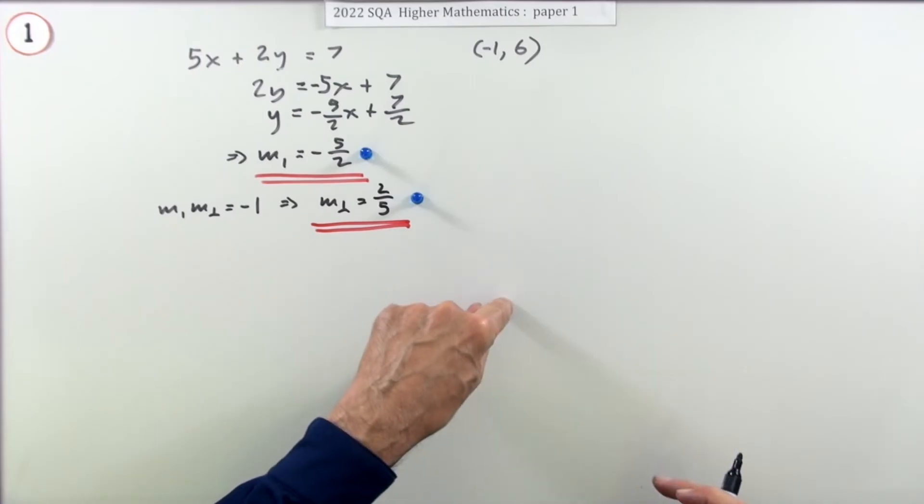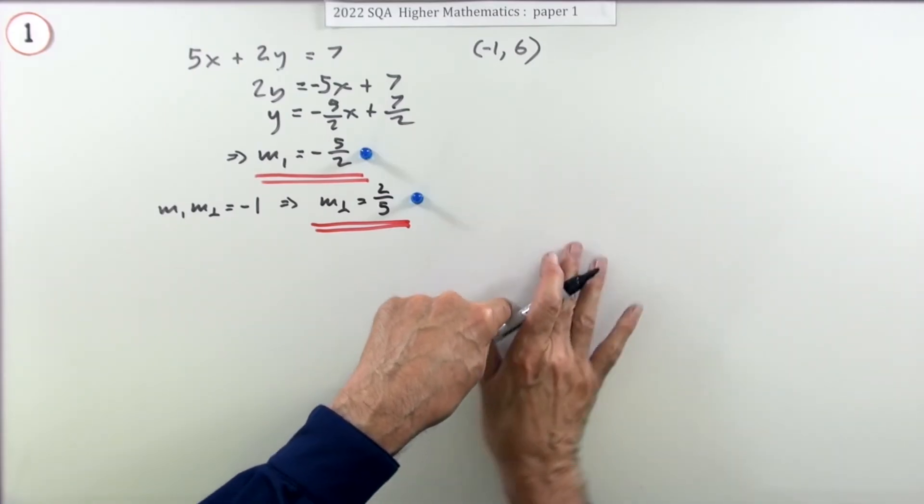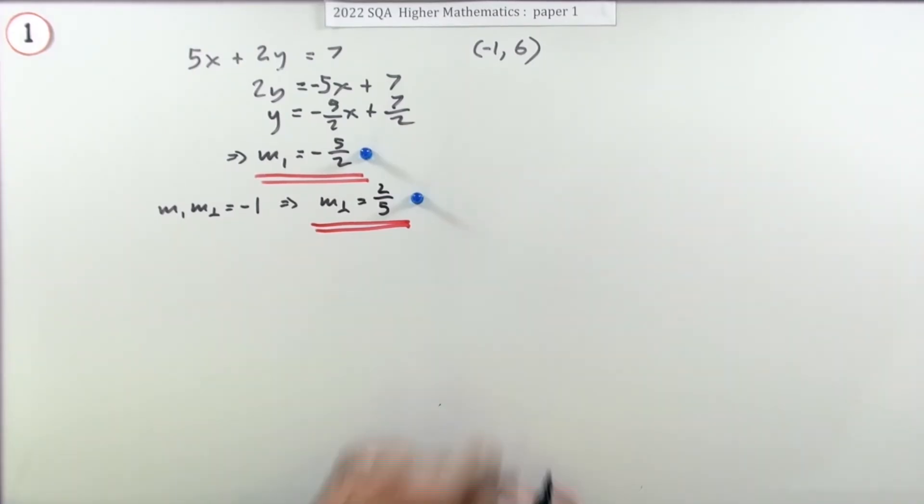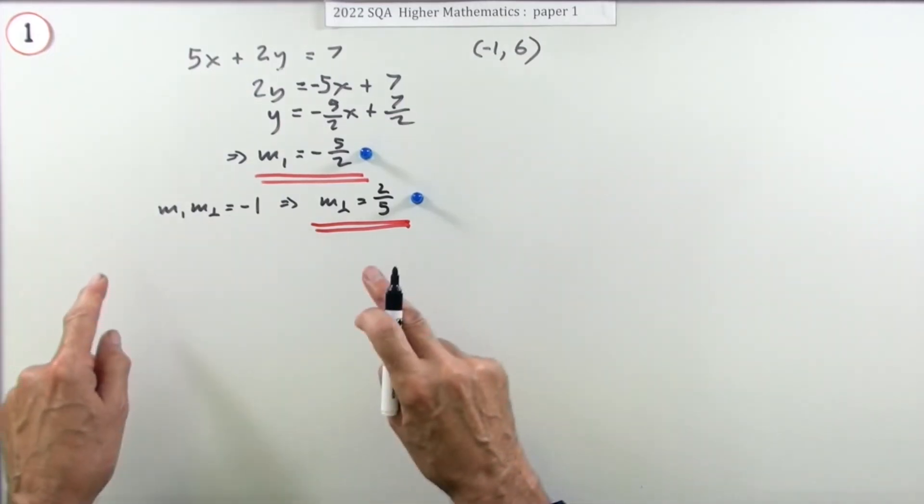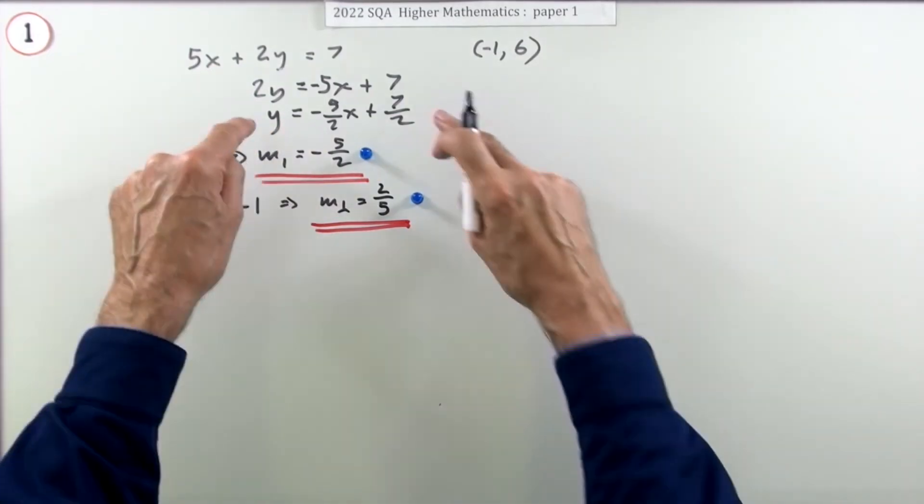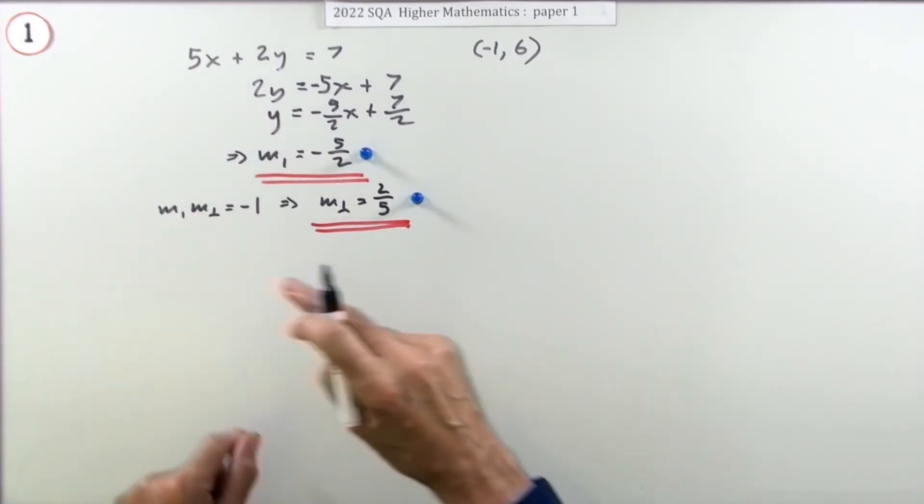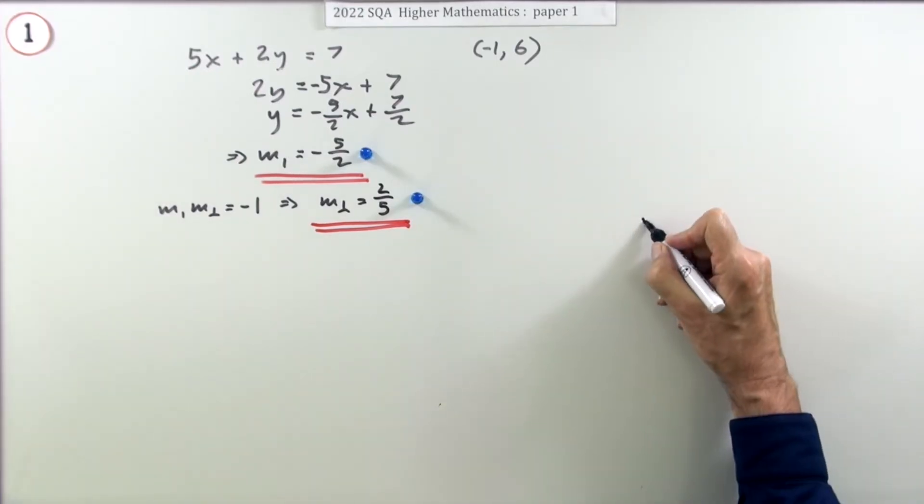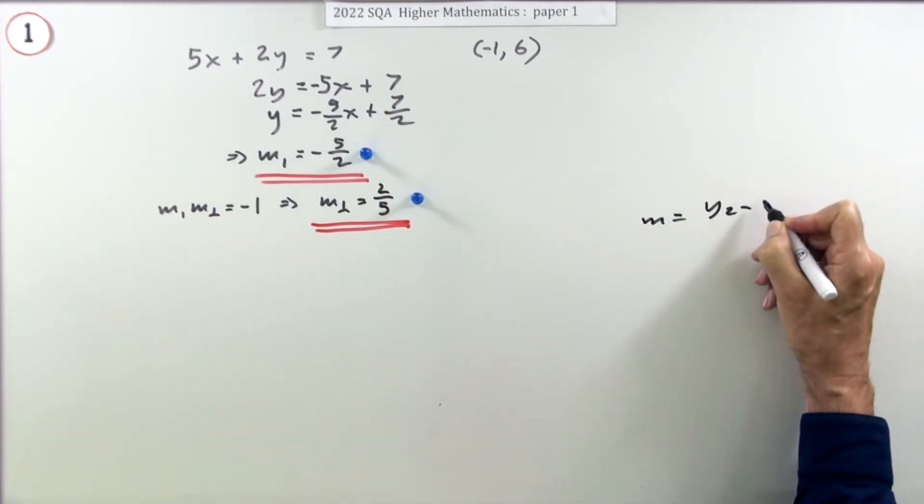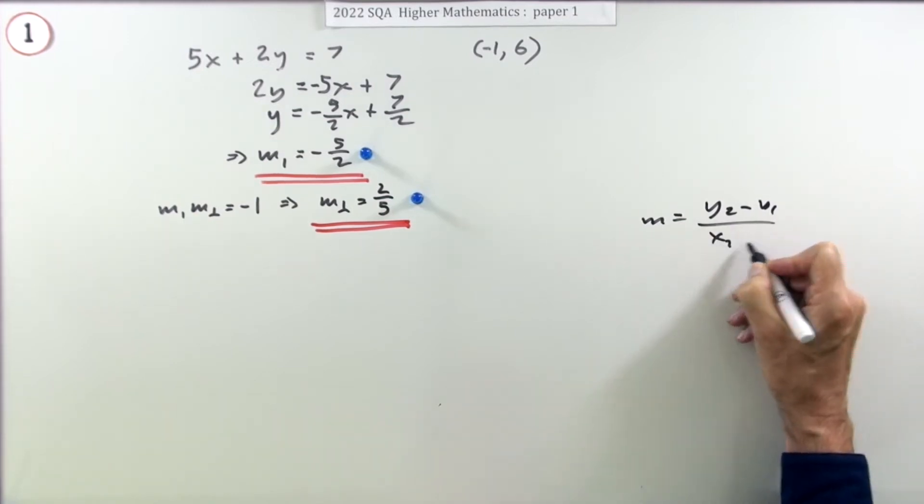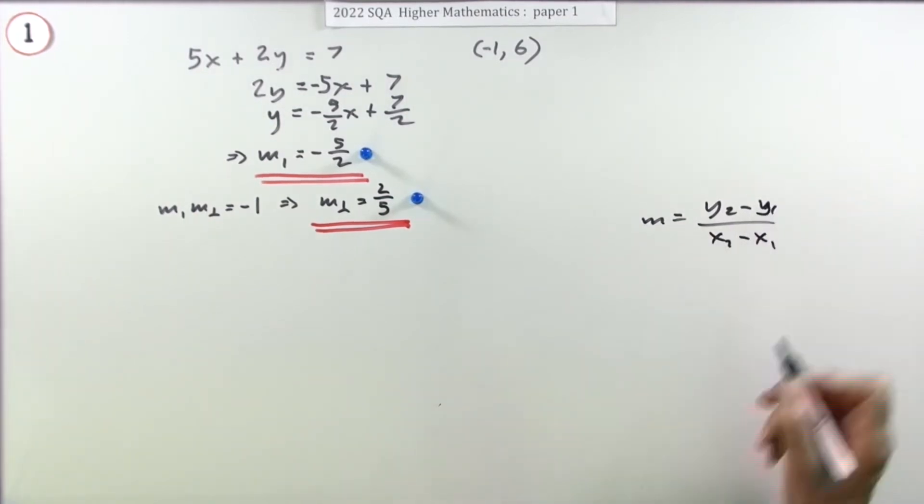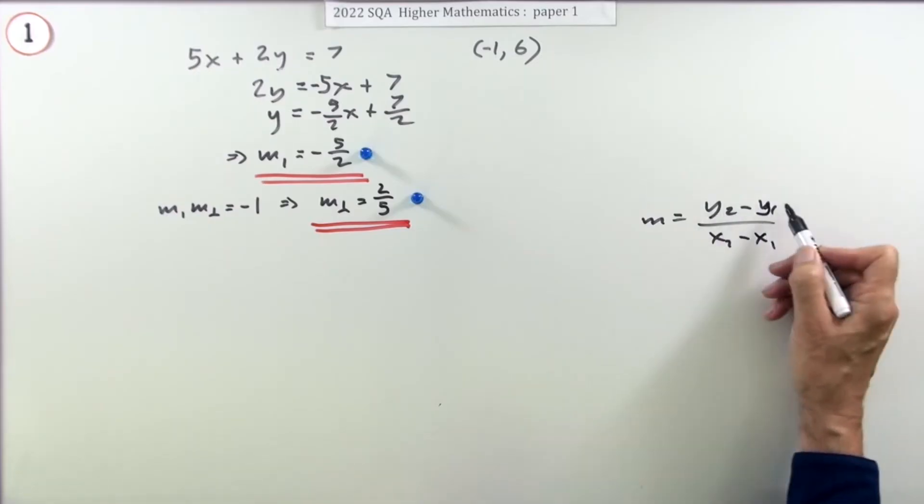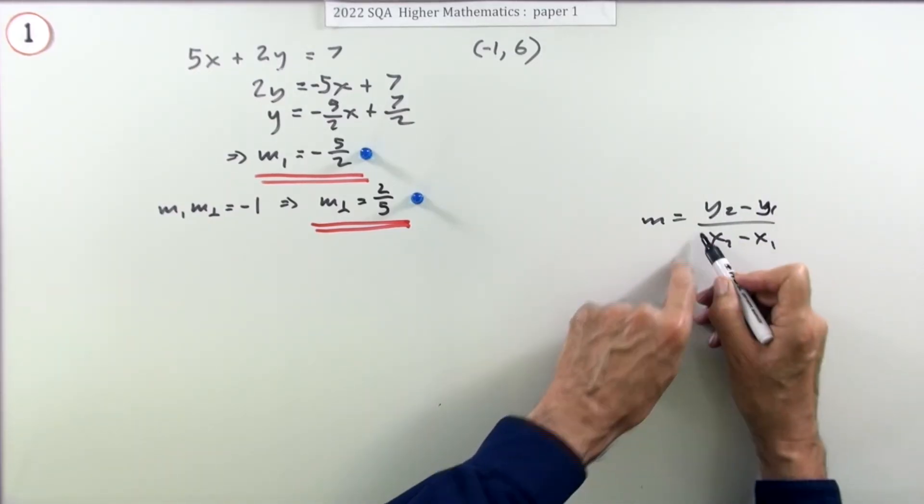Now you've got all the information you need for the line. You've got a point to fix it and you've got the direction, the gradient, to fix it in the correct direction. Well, there's two ways you could find the equation. You could use y equals mx plus c like this, or you could use y minus b equals m(x minus a), which is of course just the gradient equation rearranged. The gradient is y2 minus y1 over x2 minus x1, difference in the x's, difference in the y's, and if you take this across and multiply...